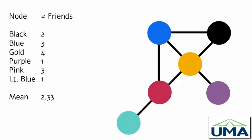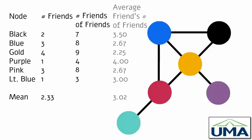We can do more than that — we can count the number of friends of any node's friends. For black, for instance, we know that black has two friends: blue and gold. Blue has three friends, gold has four friends. Three plus four means that black's friends have seven friends total. We need to take an average of that, and since there are two friends — blue and gold — the average is 3.5 friends.